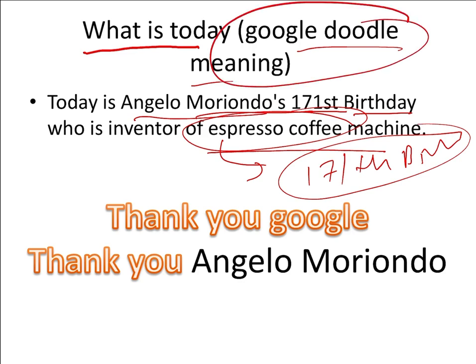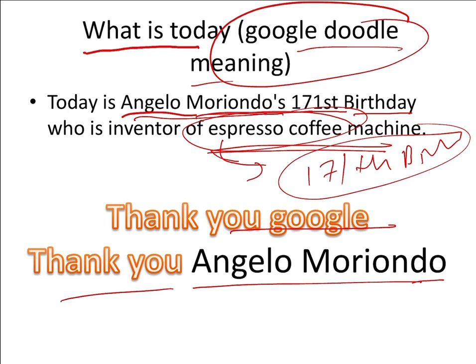He wanted the whole world to know about his invention — that Angelo Morendo was the one behind the invention of the espresso machine, or coffee machine, which we use in our daily life. Thank you Google, and thank you Angelo Morendo for his contribution to our technology and for reducing the time it takes to make coffee.